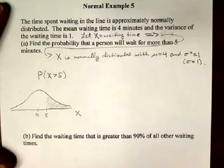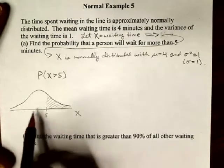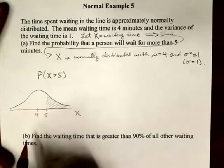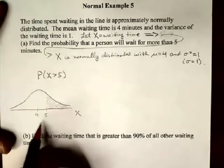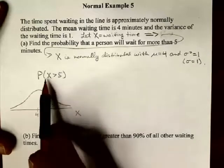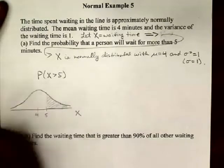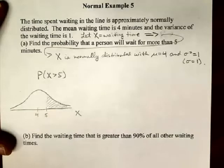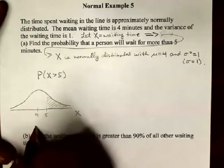Well, we can't just go straight to our table and compute that area because our table gives areas for the standard normal distribution. The standard normal, if you recall, has a mean of 0 and a variance of 1. This clearly does not have a mean of 0. But we can get to this probability by doing the appropriate z-score transformation on X.